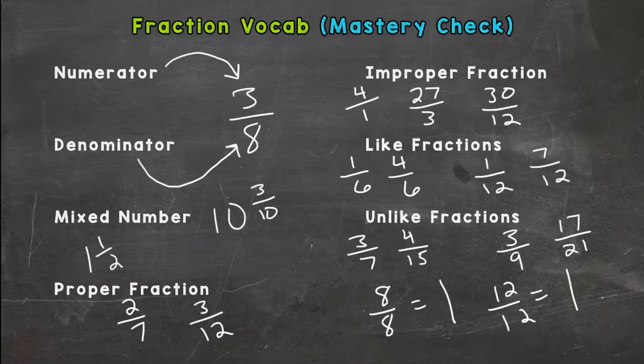Hopefully you're thinking one whole. If the top is equal to the bottom, it equals one whole no matter what the numbers are. It could be 1,000 over 1,000. That's still one whole. Alright. Thanks for watching.